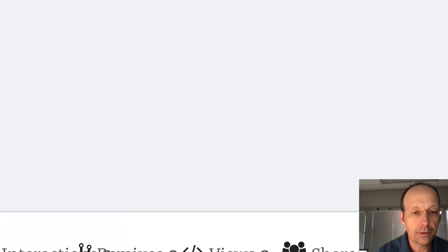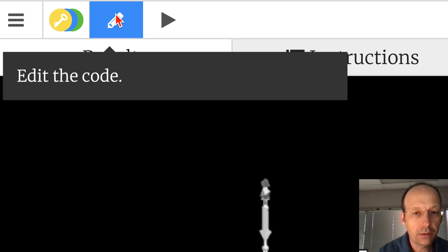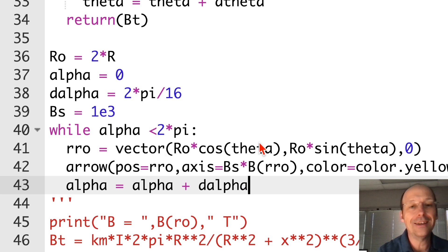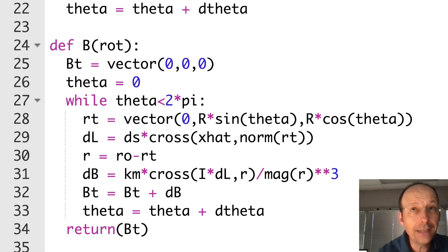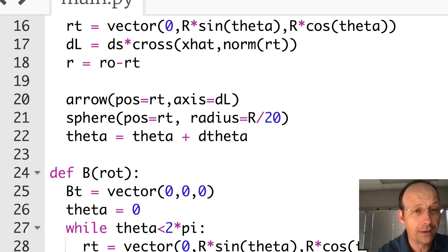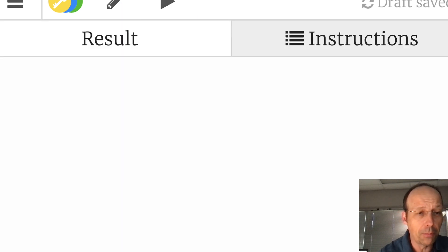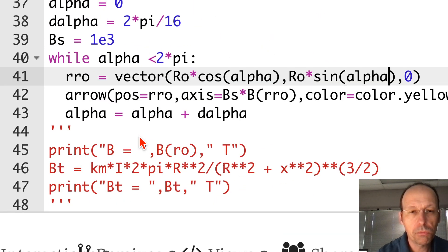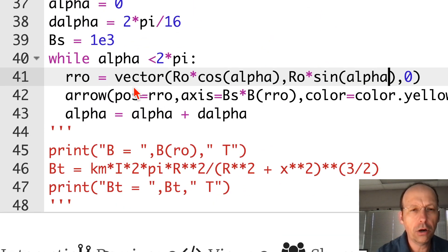So that's my vector. Now I can use that vector to calculate the magnetic field and plot it. I'm just going to make an arrow. Arrow POS is RRO. That's the location of it. Its axis is going to be BS times B of RRO. So I'm going to give it the function and it's going to return the value of the magnetic field. Let's give it a color. Color equals color.yellow. Now all I have to do is increase my value of alpha. Alpha equals alpha plus D alpha. I should probably save this. And I will give you the code. You know I give you the code, right? You know I'm not going to be like, oh, you're on your own now. No code for you. I'm giving you the code. I care. So let's run this and see if it works. No. Something happened. You only did one. Oh, I did theta.